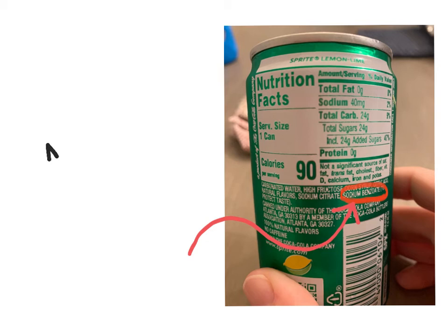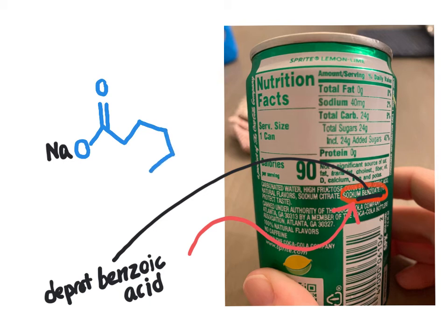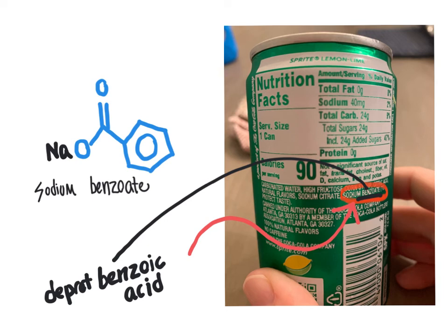The sodium part indicates we have Na⁺. The term "benzoate" indicates it is derived from benzoic acid — so benzoate is deprotonated benzoic acid. We know it's deprotonated because "oic acid" has been replaced with "oate." Benzoic acid has a carboxylic acid group directly bonded to an aromatic ring, so the complete structure of sodium benzoate is a sodium cation ionically complexed with the benzoate anion, which carries a negative formal charge on the oxygen atom.